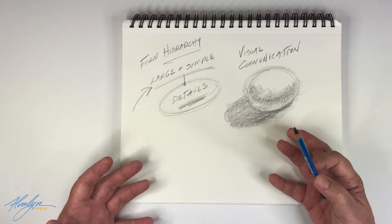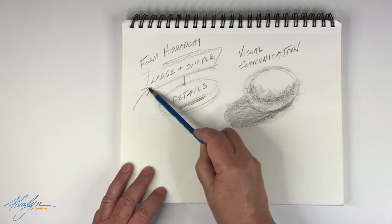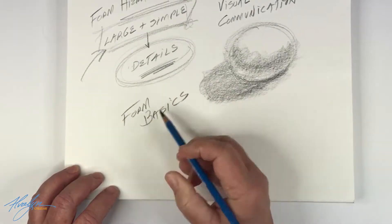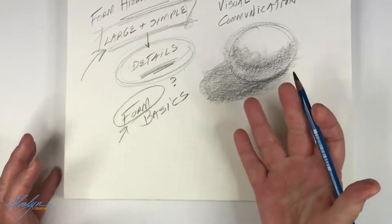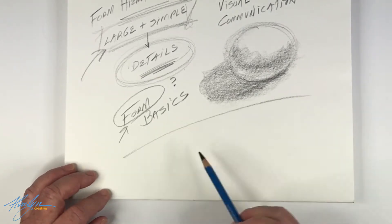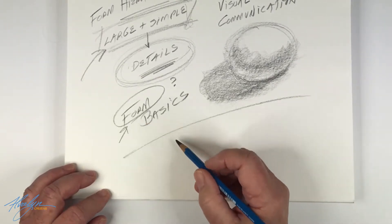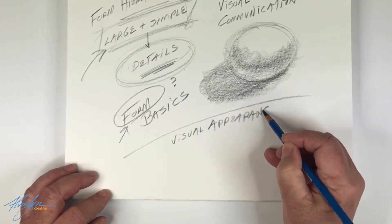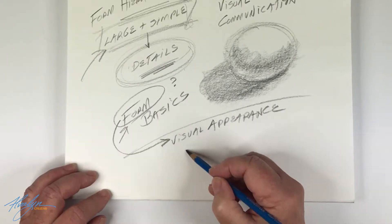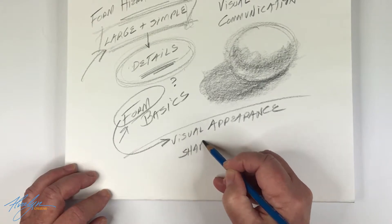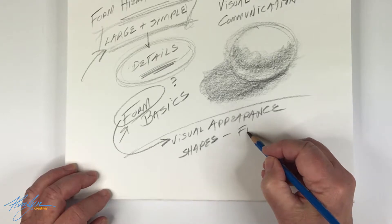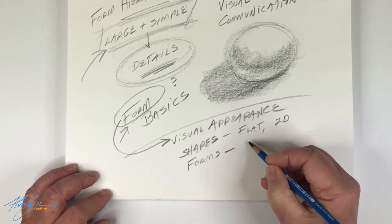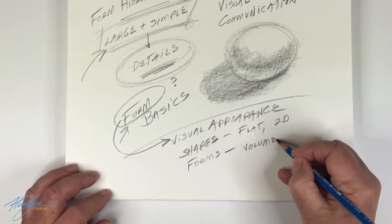We want to look at the very basics of form and understand what form is. Form is the visual appearance of something — it's how something looks. Form is made of shapes. Shapes are flat and two-dimensional. Forms, in reality, are volume — they have height, width, and depth, and are therefore three-dimensional.